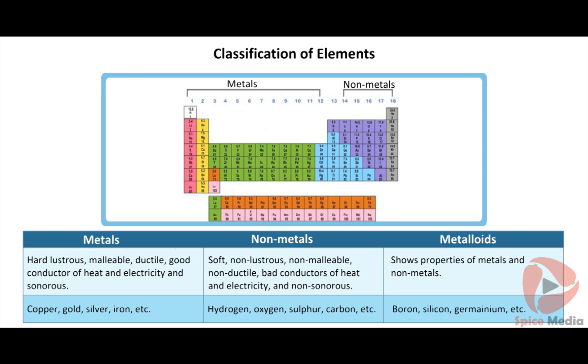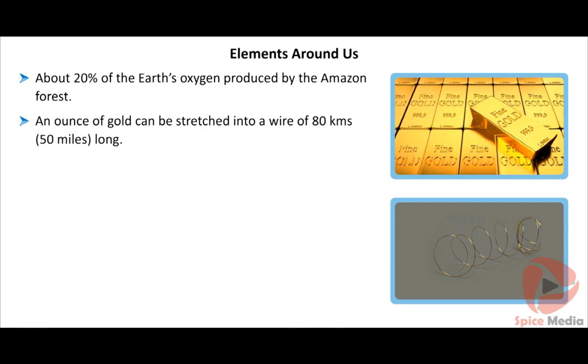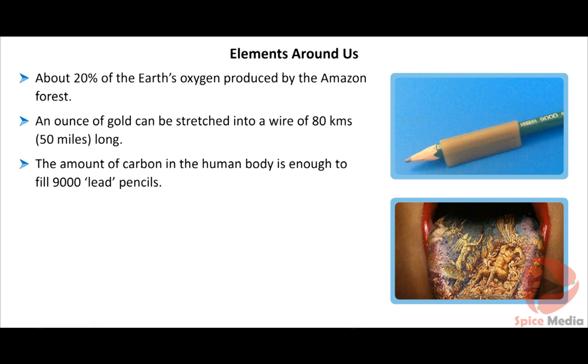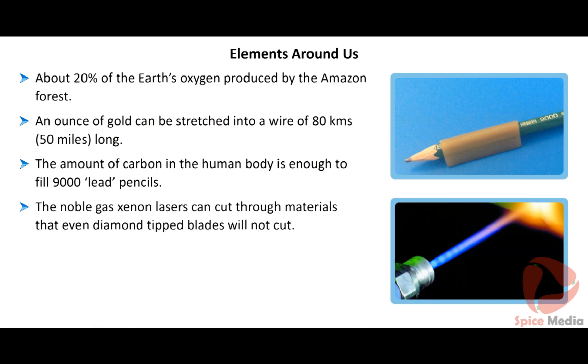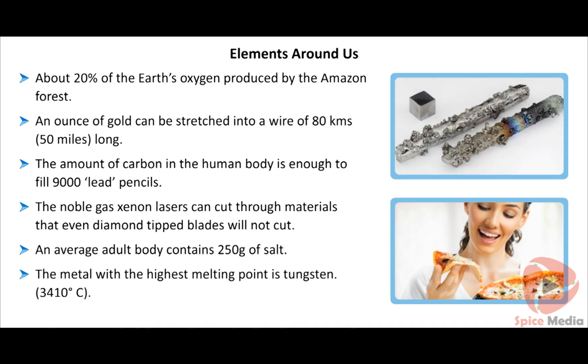About 20% of the Earth's oxygen is produced by the Amazon forests. An ounce of gold can be stretched into a wire of 80 kilometers, 50 miles long. The amount of carbon in the human body is enough to fill 9,000 lead pencils. The noble gas xenon lasers can cut through materials that even diamond-tipped blades will not cut. An average adult body contains 250 grams of salt. The metal with the highest melting point is tungsten, 3410 degrees Celsius.